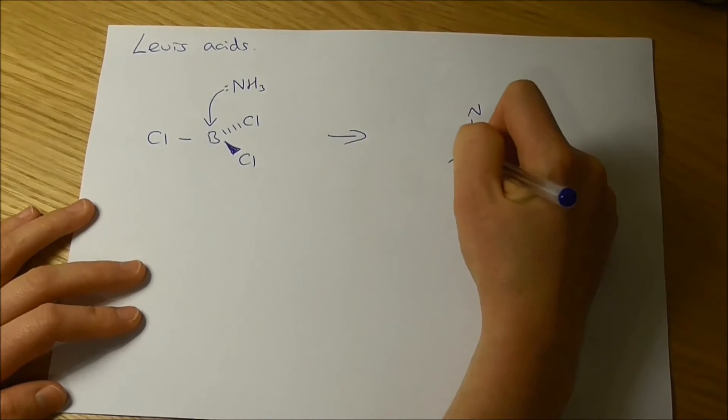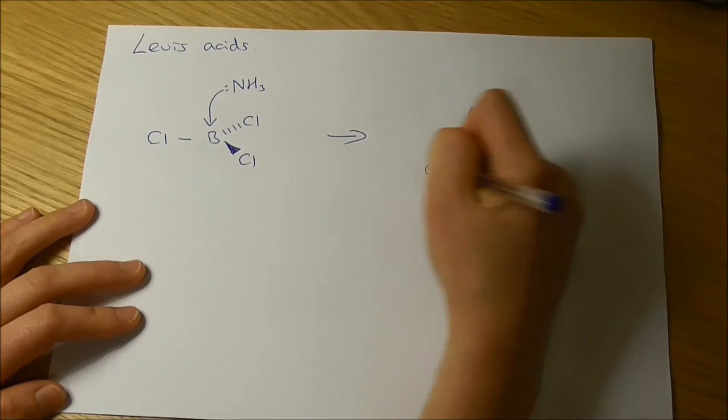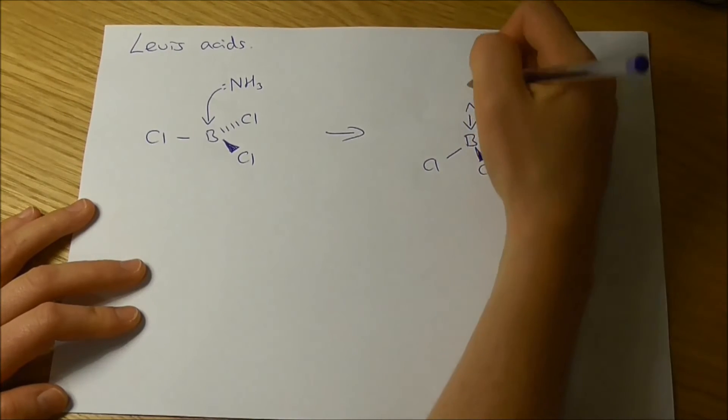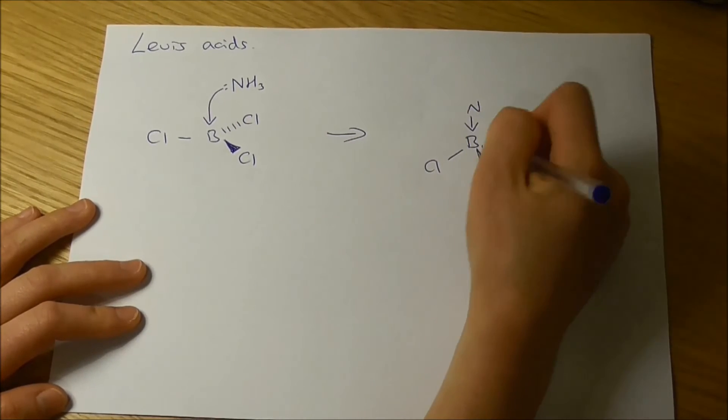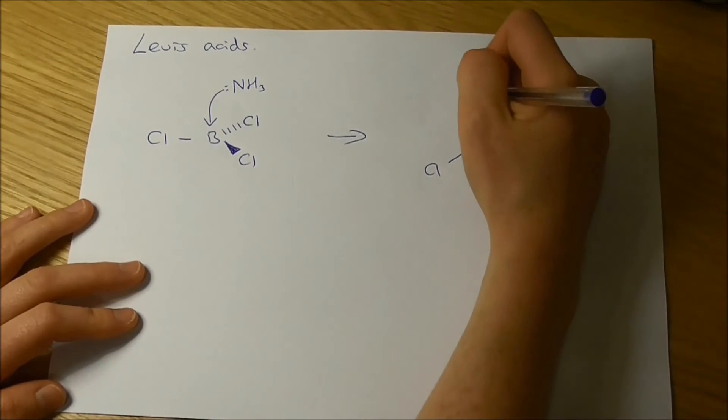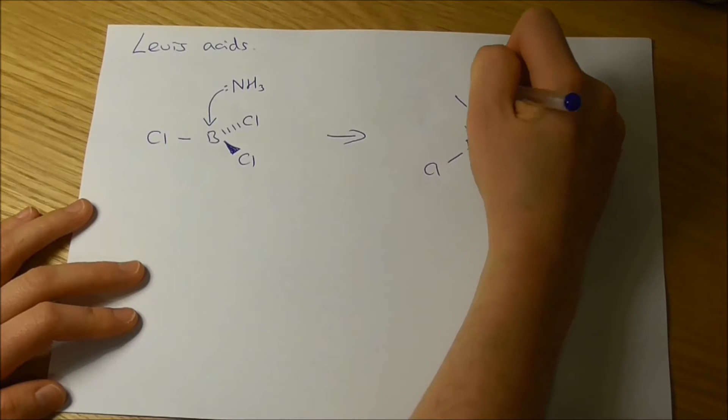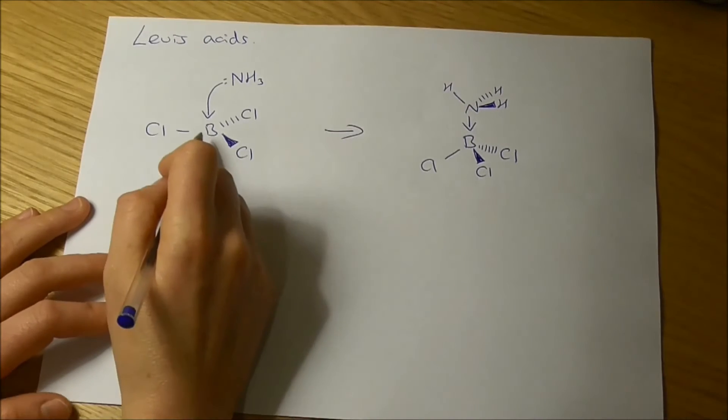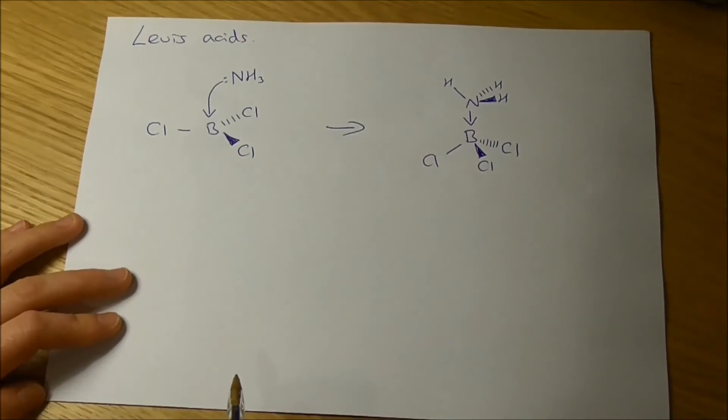The boron is now, instead of being sp2 hybridised, the boron is now sp3 hybridised. It's got four bonds around it, four pairs of electrons. It's tetrahedral geometry. And then we'll just fill in our ammonia up the top. So the boron's gone from being trigonal planar to tetrahedral.